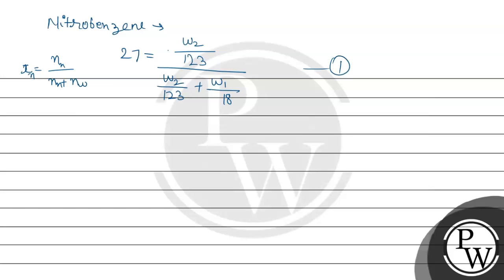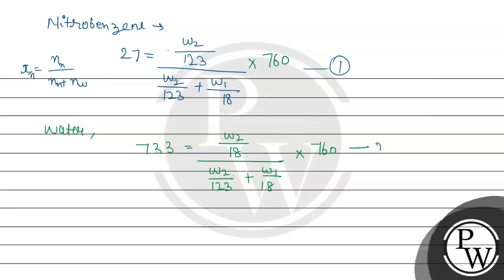In a similar way, for water, the vapor pressure given is 733, equal to the mole fraction of water, which is (W1/18) divided by (W2/123 + W1/18), multiplied by 760. This is Equation 2.